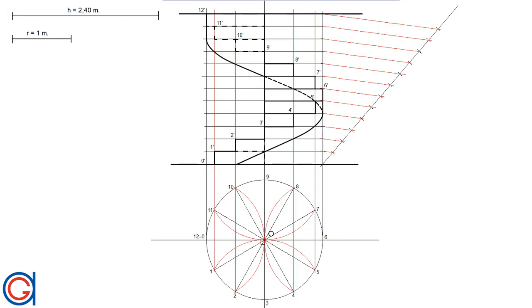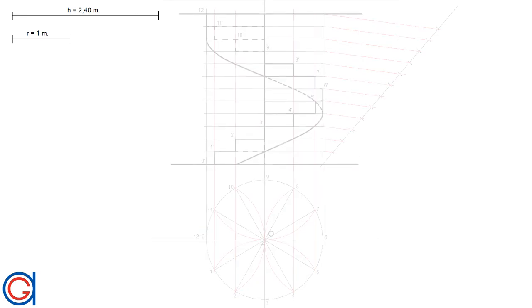This is a standard width of a step for a spiral staircase and 2.4 meters could be a typical height of floor or story in any house. You can adjust these measurements according to your specific needs. The process is very similar.